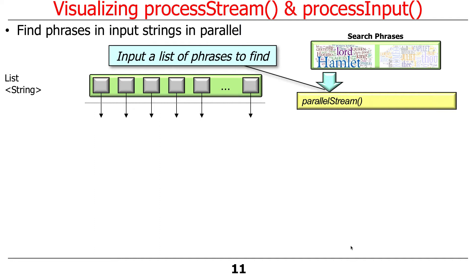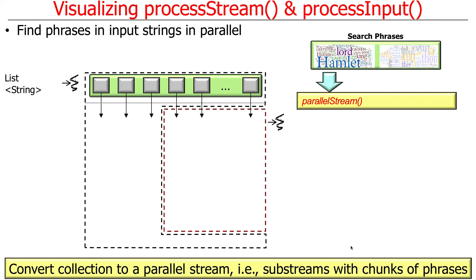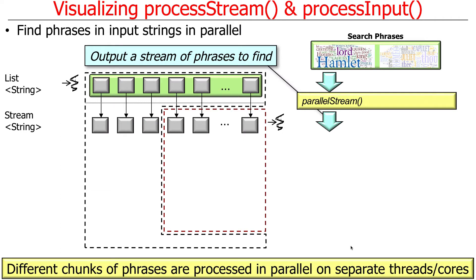It starts out with a list of input phrases. We have a list of input phrases to find, and calling parallel stream is going to partition the input — by using a spliterator — up into multiple substreams, which are chunks of phrases or input strings that are going to be processed in parallel. That ends up with an output stream of phrases to find. The key differentiator from the sequential version is that the sequential version ran everything in one thread of control, whereas this version runs some chunks in one thread and some in another.